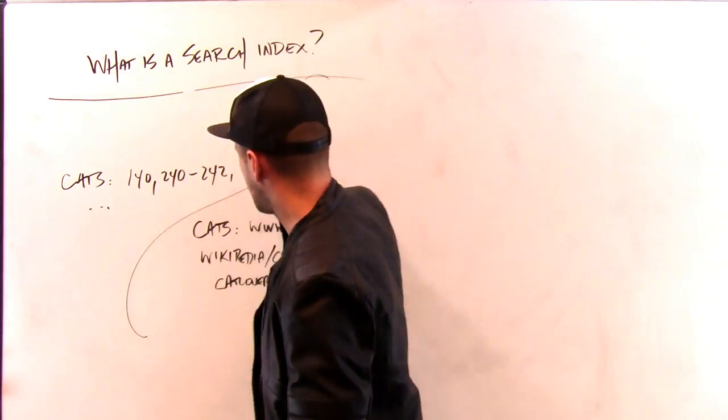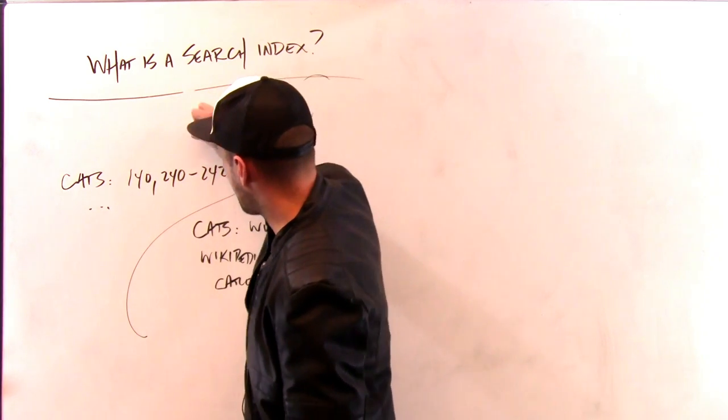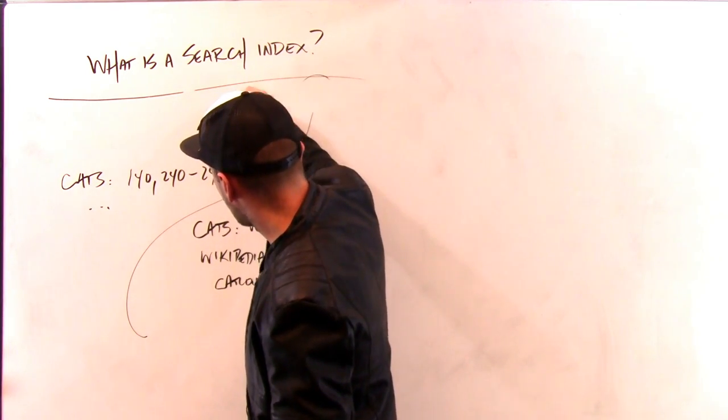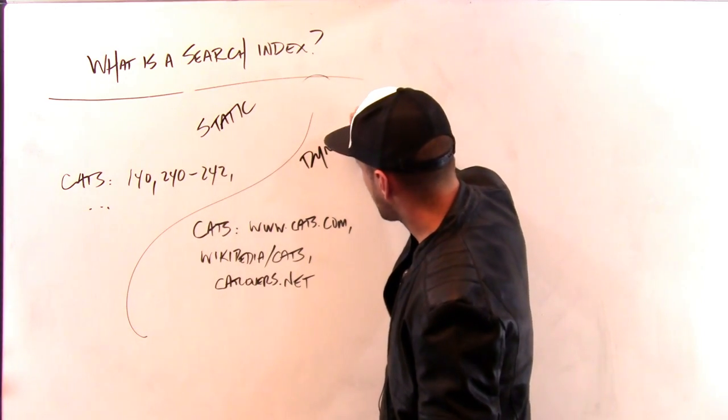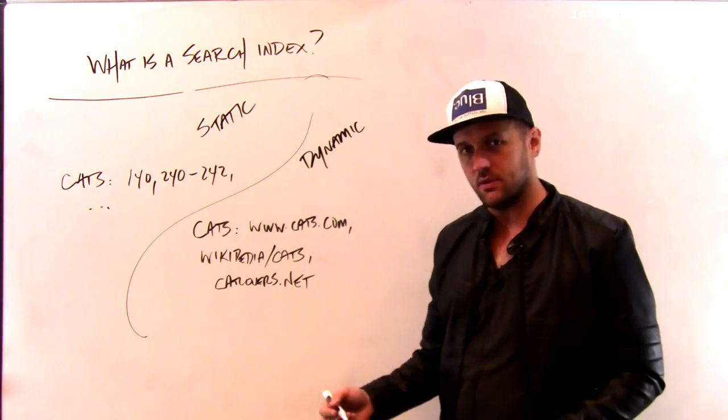So book indexes, static. The book contents aren't changing all the time, whereas search indexes are dynamic. And so search indexes are being constantly rebuilt over time.